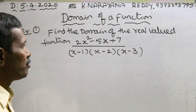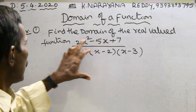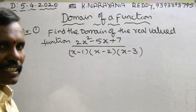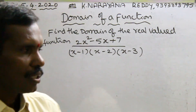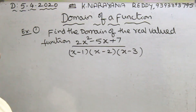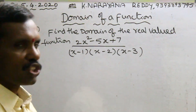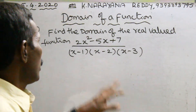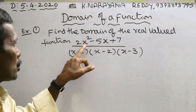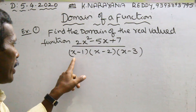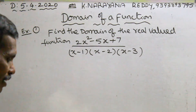See the problem. Find the domain of the real-valued function. What is a real-valued function? Simply, it is nothing but real numbers — that function containing real numbers, that belongs to R. Find the domain of the real-valued function: 2x squared minus 5x plus 7, divided by (x minus 1)(x minus 2)(x minus 3).